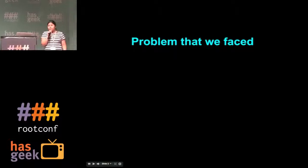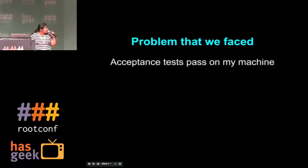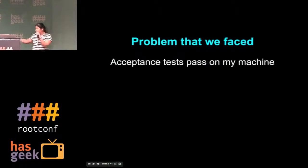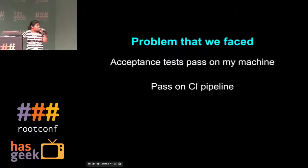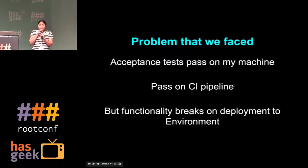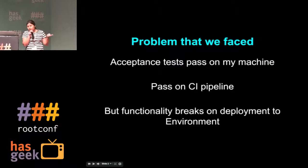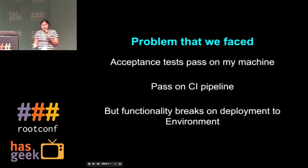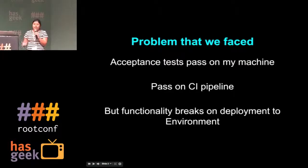I'm going to talk about the problem that we face, because of which we thought of the solution I'm going to propose. There is a common complaint: my acceptance tests are passing on my machine, the acceptance tests are passing on the CI pipeline as well, but still when we deploy on the environment, the functionality breaks. Why does the functionality break on deploying to the environment? Because our environment has multiple boxes running the application on separate servers, but when we develop on our machine, it's just one single box on which all the applications are running.